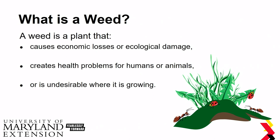First, let's talk about what is a weed. A weed can be three things: a plant that causes ecological losses and damage, something that's going to create health problems for humans or animals, or something that's really undesirable where it's growing — like weeds in our lawns and stuff like that.